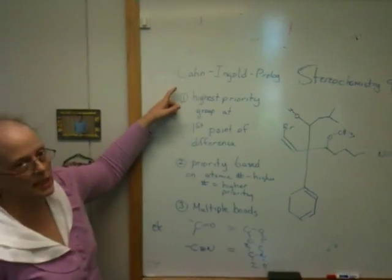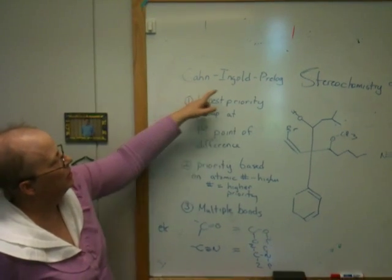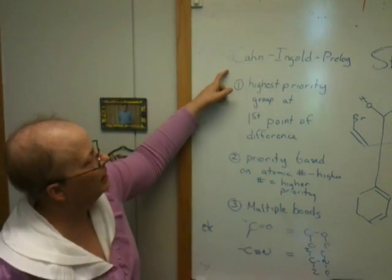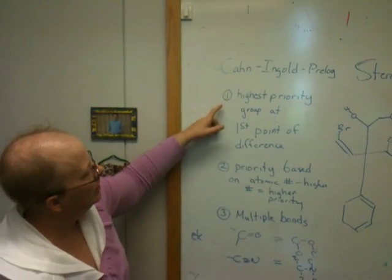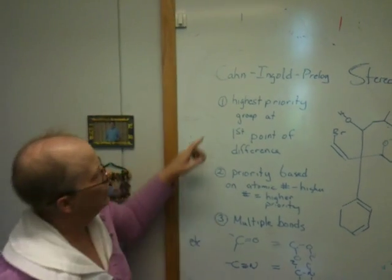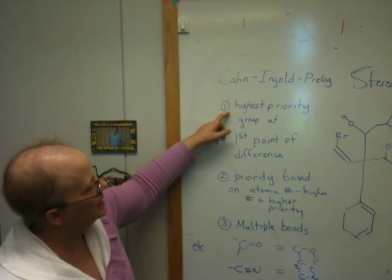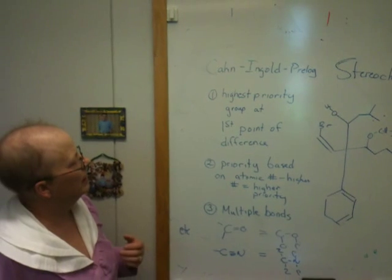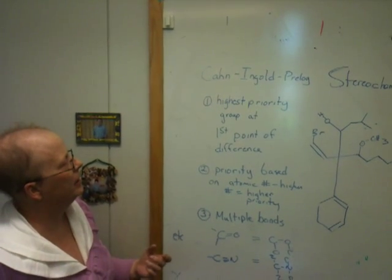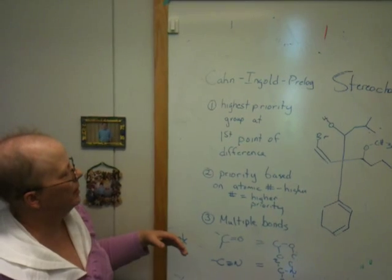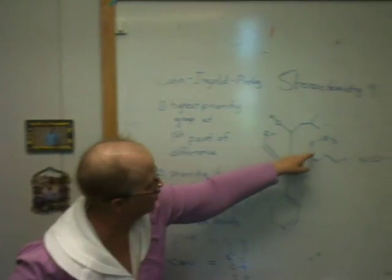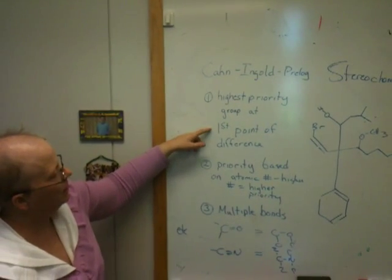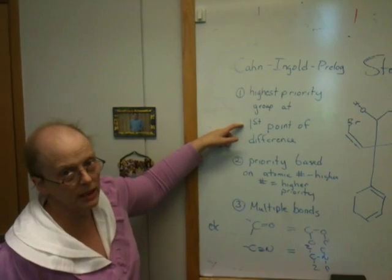So up here, I've written some of the basics of Cahn-Ingold-Prelog nomenclature regarding absolute configuration. If I were going to sum it up and say it very briefly, what you have to do is assign the four different groups priority numbers. And you assign one the highest priority, and then you work your way down to the lowest priority. So you assign priorities to all four groups around the center. And the priority is based on the first point of difference in the group, and that's what we're going to illustrate here.